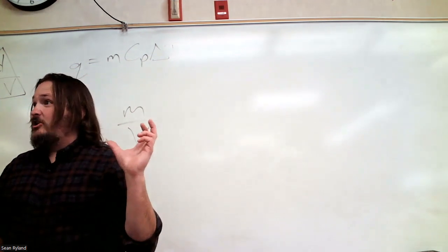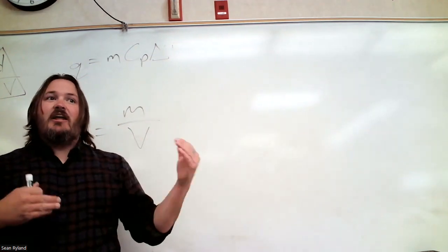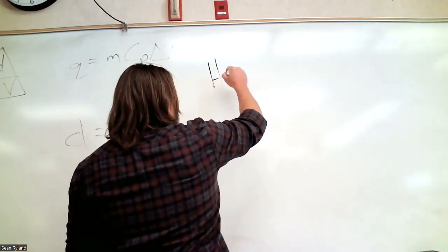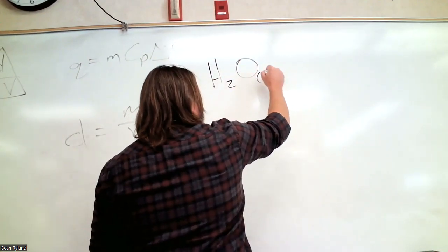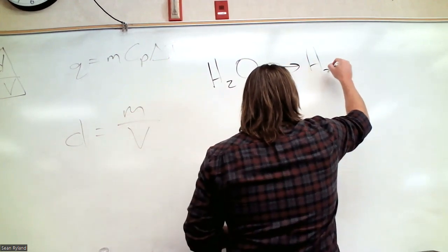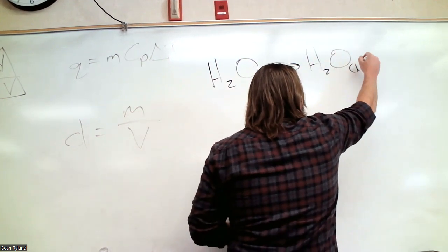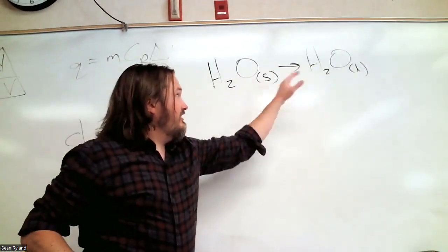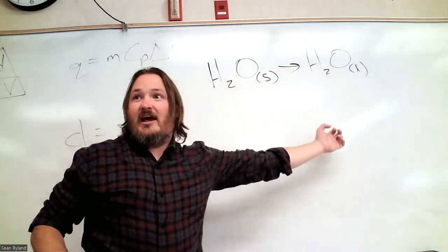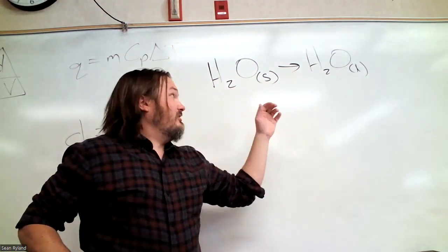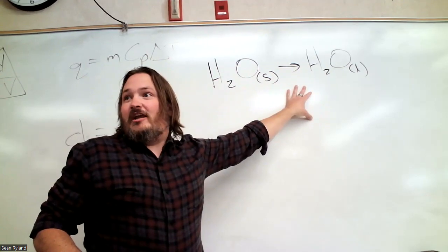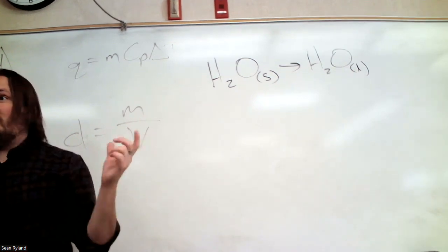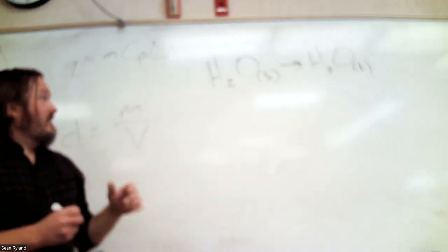Anything you can write as a chemical reaction almost always is going to have a change in energy associated with it. So in this case, if we're just talking about ice melting, we can represent it as solid H2O turns into liquid H2O. Any time you've got a transition like that with two different states on either side, there's always an energy change associated with that. That's delta H.